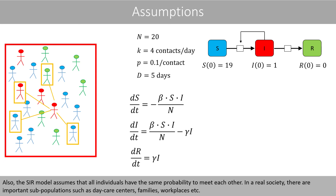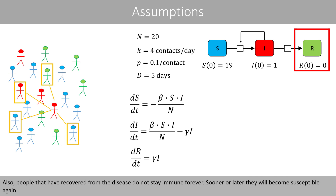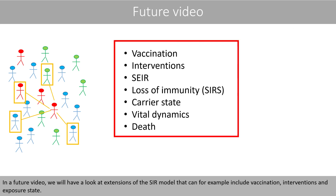Also, the SIR model assumes that all individuals have the same probability to meet each other. In a real society, there are important subpopulations such as daycare centers, families, and workplaces. Additionally, people that have recovered from the disease do not stay immune forever — sooner or later, they will become susceptible again. In a future video, we will have a look at extensions of the SIR model that can, for example, include vaccination, interventions, and exposure state.